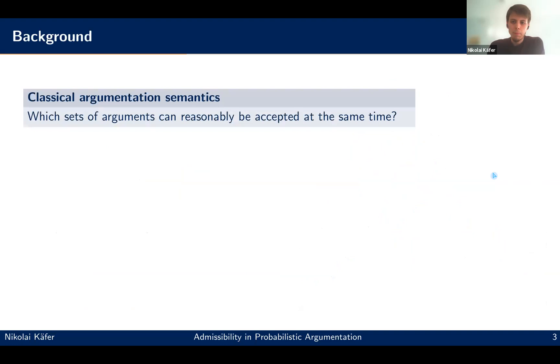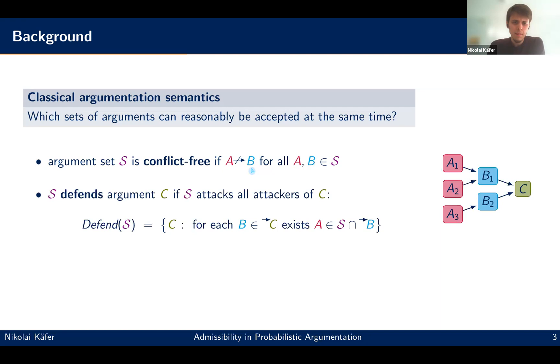So a very quick background, I guess you're all familiar with classical abstract argumentation. We consider semantics and semantics just tells us which sets of arguments from a given argumentation framework we can reasonably accept together. And of course, there are all kinds of properties such sets should have. Most importantly, we usually only consider conflict-free sets. So for two arguments, A and B in the set, there should not be an attack between them.